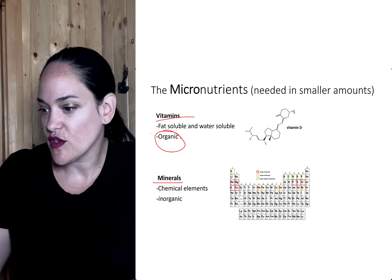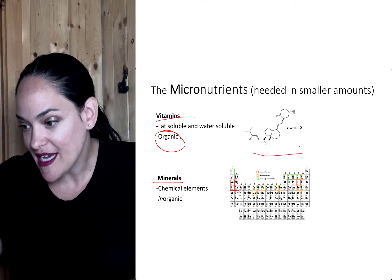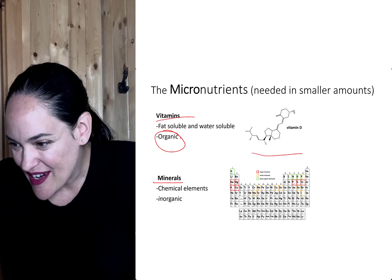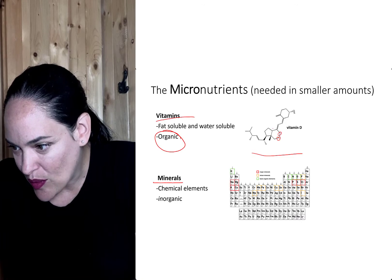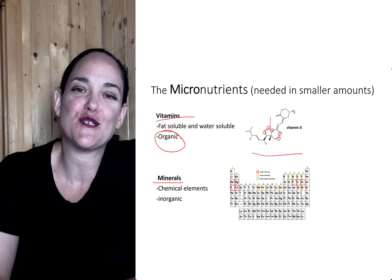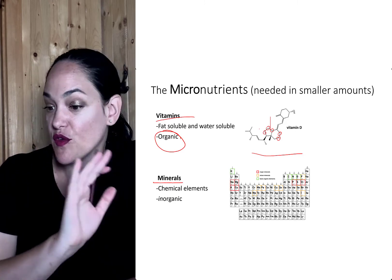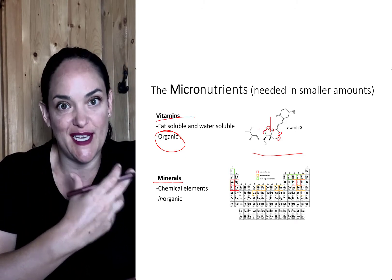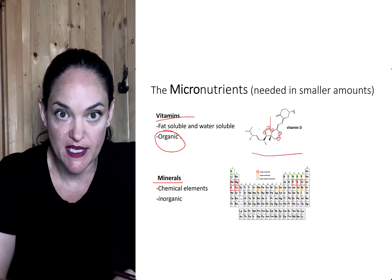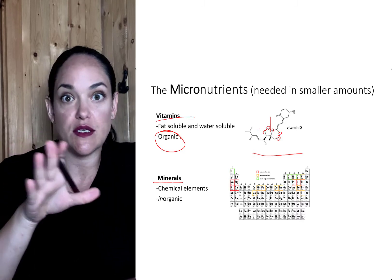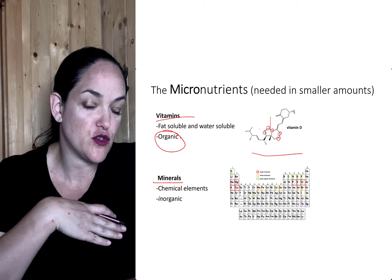If you look at a structure here — here we have vitamin D. Every time you see a little point on this structure, that shows where there is a carbon. So vitamins are carbon-based structures, which makes them organic. Minerals are inorganic — they don't have carbon in their structure.